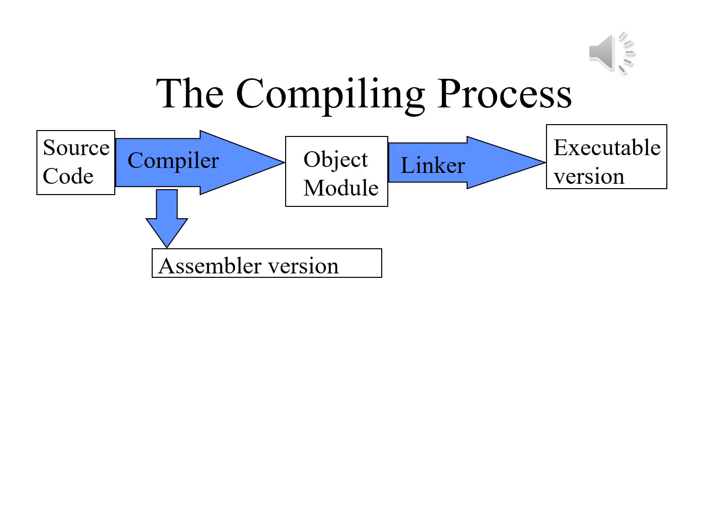The slide shows in diagram form the process of compiling a program. We start off with the source code — the version of the program written in the higher-level language — and run it through the compiler to get a translation. There's a side arrow going down to a box marked 'assembler version,' which is an option we may have in many instances to see what the program looks like in assembly language, which is far easier to read than machine language. The problem is that there are many things missing from this. One illustration I'll frequently give is how the front page of the New York Times is assembled, where the front page contains the beginning of a variety of different news articles, all of which are continued inside.